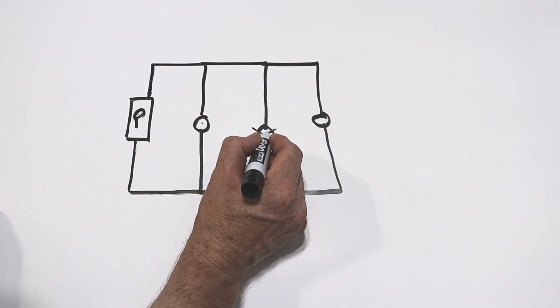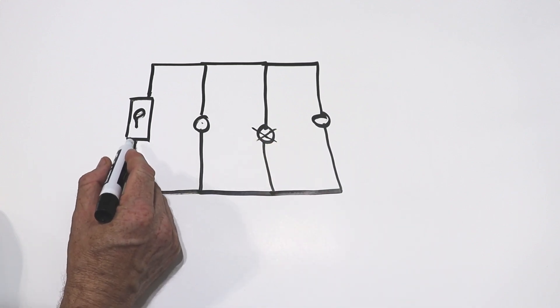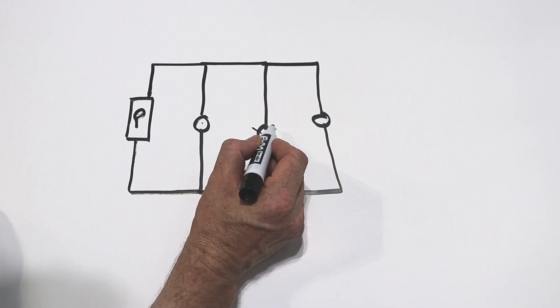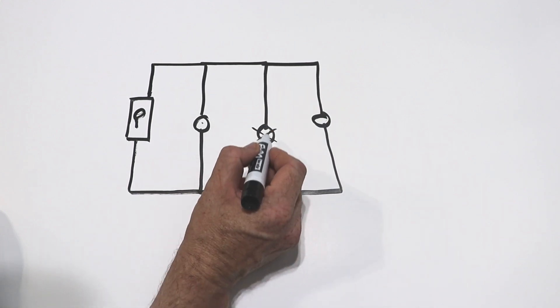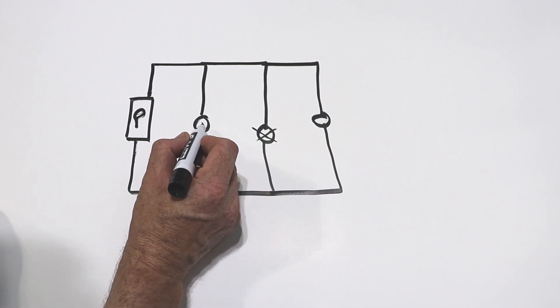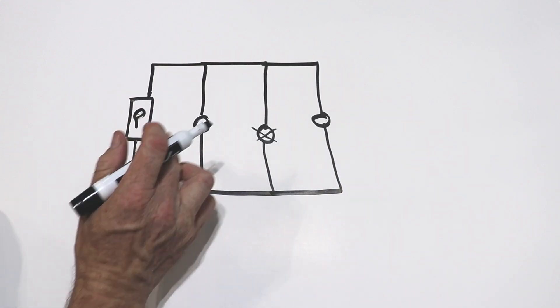And the reason that works, let's say these are lights, this light bulb burns out. In a parallel circuit, you have multiple paths for the electrons to flow. So you just broke the circuit here, and no electricity is flowing through that bulb anymore because that filament burned out. But you still have electricity flowing through the other bulbs lighting them.